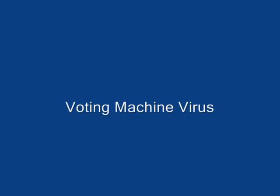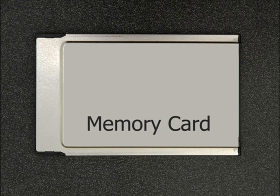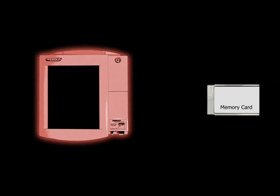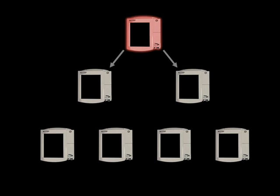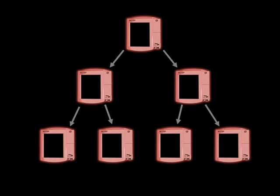Due to design flaws in the Diebold AccuVote TS voting machine, it is possible to construct a computer virus that infects these machines and spreads automatically from one machine to many others. The machines use removable memory cards to distribute software updates and store the results of elections. The memory cards function similarly to floppy disks or thumb drives on ordinary PCs. Memory cards act as carriers for the virus. When a memory card is inserted into an infected machine, the machine copies the virus onto that card. If the card is later put into another machine, the virus spreads to the new machine. In this way, the virus can spread from one infected machine to an entire population of machines.